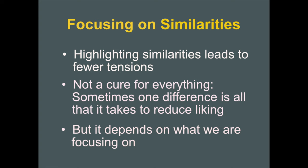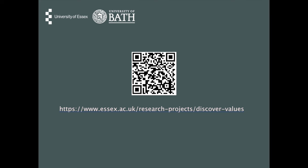Of course, focusing on similarities is not a cure for everything. Sometimes there's one tiny thing about another person that is different, and if we find that tiny thing important or quite strange, we are less likely to engage with that person. But in general, if we focus more on similarities and on things we have in common, we can reduce polarization because we are more likely to be open-minded and approach people from other groups. Thank you. If you want to learn more about this exhibition, please visit our website, where you can complete a short value survey to learn more about your own values and how they compare to other people's values.